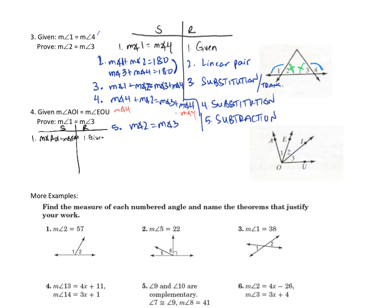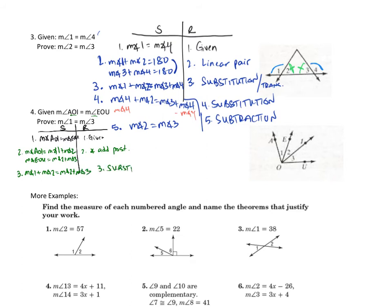We're going to say that the measure of angle AOI equals the measure of angle 1 plus the measure of angle 2. And the measure of angle EOU equals the measure of angle 2 plus the measure of angle 3. This was the angle addition postulate. Since those two angles are equal to each other, I can set the parts equal by substitution: the measure of angle 1 plus angle 2 equals the measure of angle 2 plus angle 3. This was substitution.